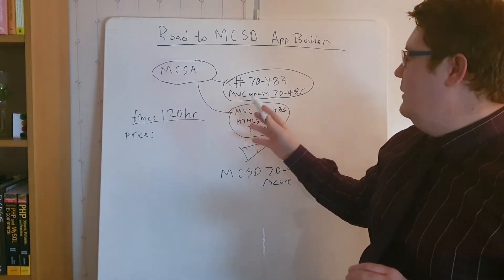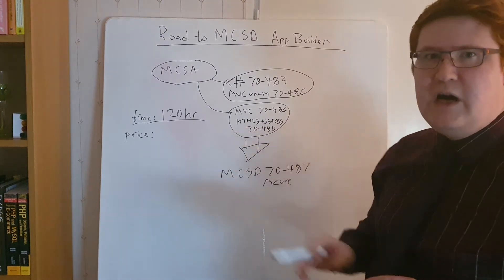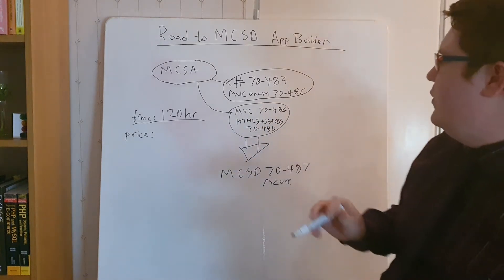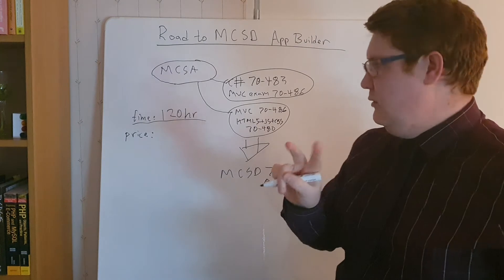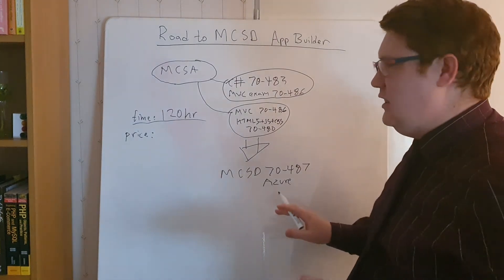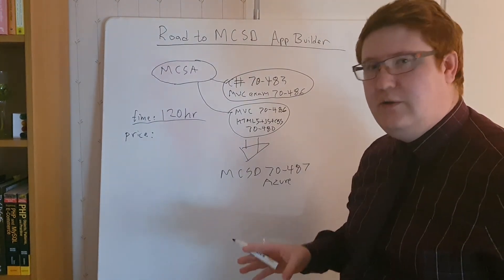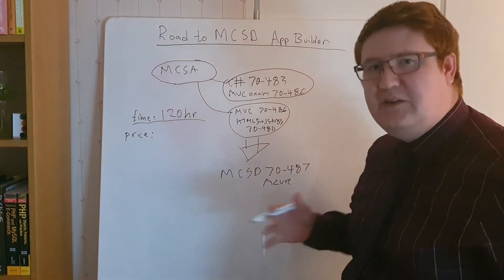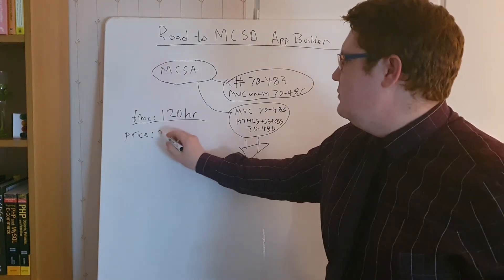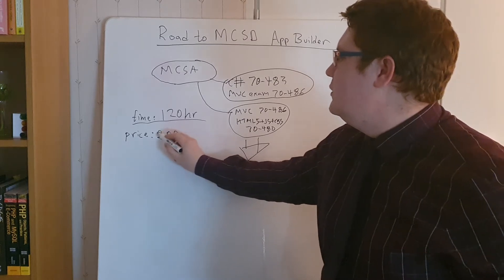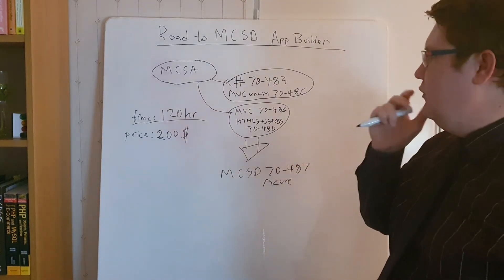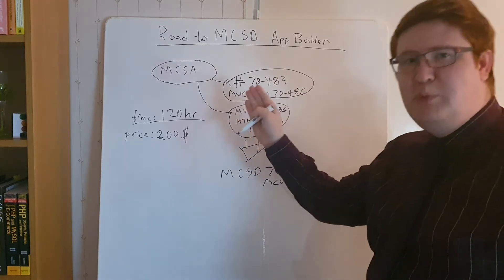I'd recommend getting practice exams for at least two of them — either C#, MVC, or HTML5 depending on your choice. For the Azure 70-487 exam, it's better to be more practical when you practice. The price for that is around $200.